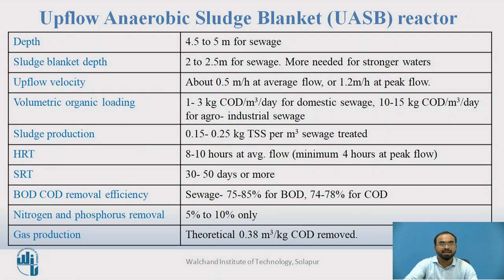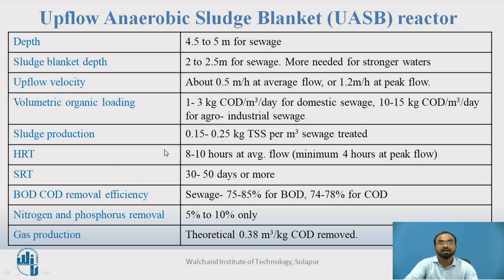Talking about its parameters: normally the depth of UASB is around 4.5 to 5 meters for sewage. The sludge blanket zone depth is around 2 to 2.5 meters for sewage, and can be increased for stronger wastewater. Upflow velocity is normally kept at about 0.5 meters per hour for average flow, and can be increased up to 1.2 meters per hour. The volumetric organic loading is typically 1 to 3 kg COD per cubic meter per day for domestic sewage, and 10 to 15 kg COD per cubic meter per day for agro-industrial sewage. Sludge production is generally around 0.15 to 0.25 kg TSS per cubic meter of sewage treated. HRT is typically kept around 8 to 10 hours for average flow, with a minimum of 4 hours for peak flow.